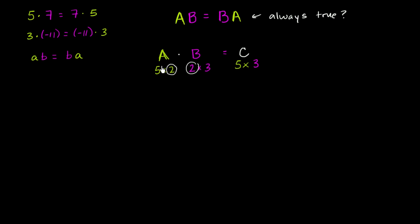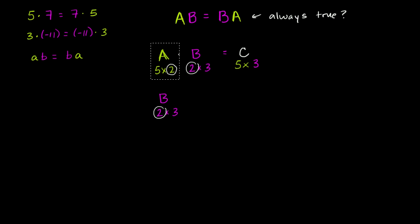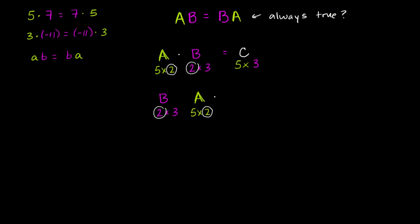Now what about the other way around — what would B times A be? If we take B, a 2 by 3 matrix, and multiply it times A, a 5 by 2 matrix, the first question is: is matrix multiplication even defined for these two matrices? When you look at the number of columns that B has and the number of rows that A has, you see that it is not defined — there's a different number of columns for B than rows for A. So the product BA is not defined.